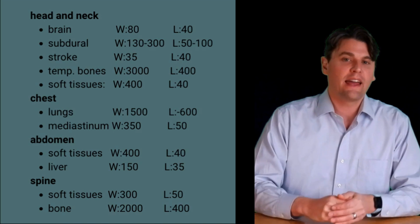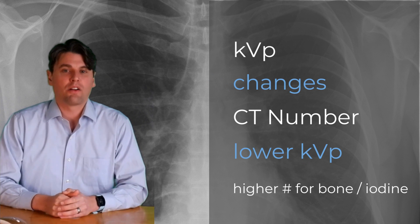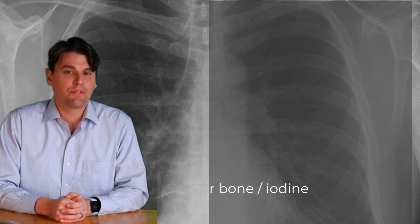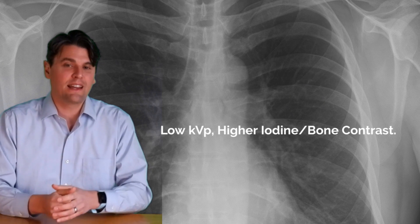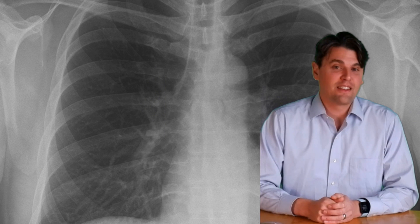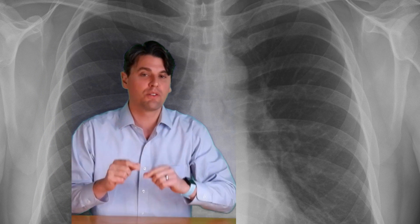The CT number is highly dependent on the kVp as well. The values given here are based around the industry standard of 120 kVp imaging, which has been the standard for some time. Currently there is a trend toward lower kVp imaging, and in that scenario bone will be more attenuating and appear brighter, and soft tissues — especially if iodine contrast is on board — will also differ, so you'll need to adjust your window widths and levels accordingly in clinical imaging.